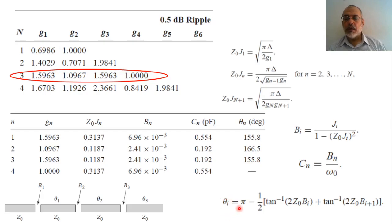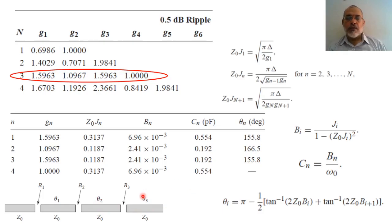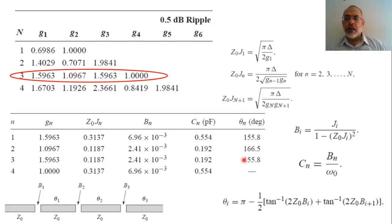Theta_i equals pi — which corresponds to a lambda/2 length — minus (1/2)·[arctan(2·Z_0·Bi) + arctan(2·Z_0·Bi+1)]. By knowing the values of Bi, we can determine the electrical lengths theta_1, theta_2, theta_3, corresponding to the first, second, and third resonators. It should be noted that these electrical lengths are quite close to 180 degrees, meaning the resonators are close to lambda/2 in length.